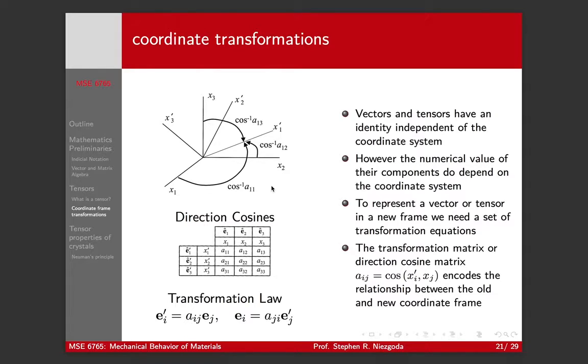Even though a vector or tensor has an identity independent of the coordinate system, the numerical value of their components do depend on the coordinate system. If I have vector [1,1], it gives me 1 in x and 1 in y. If I do a 45 degree rotation about z, that vector hasn't changed, but I define new axes that are rotated by 45 degrees. That vector now has components [1,0] because the x-axis is now parallel with that vector. So the vector hasn't moved but how we describe the components of that vector has changed.